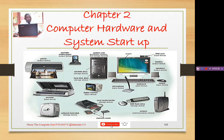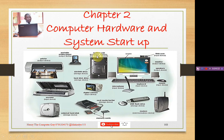We have a screen, also categorized as output, because it helps us to display items that are produced or processed by the computer. Then we have the system unit, categorized under processing. Inside the system unit we have the processor — the central processing unit, or the brain of the computer. We can also have memory there, for example the Random Access Memory, the RAM. We can have storage devices — for example, the hard disk, which can be found inside if it is internal.